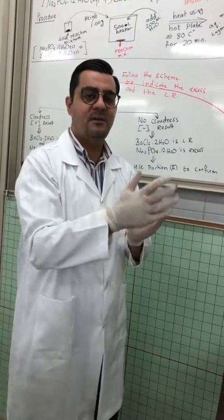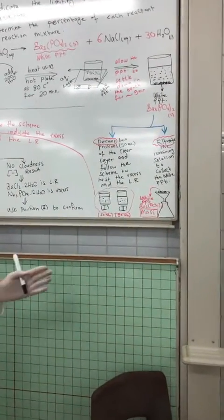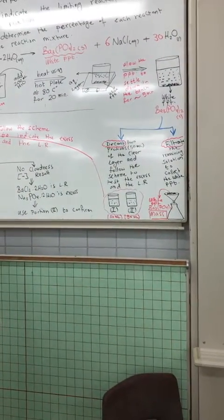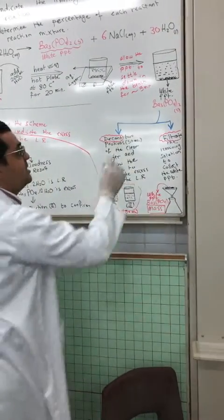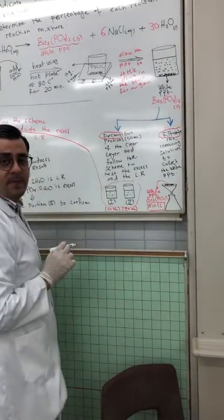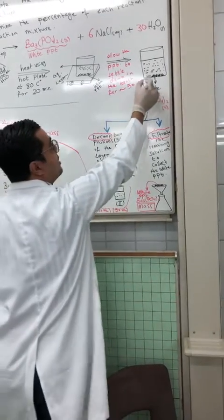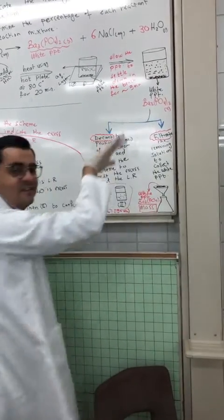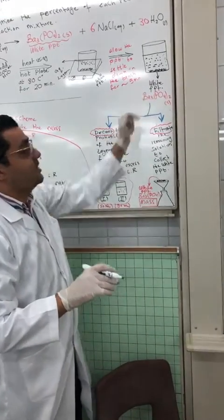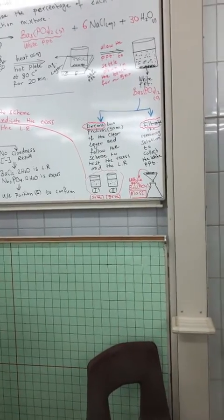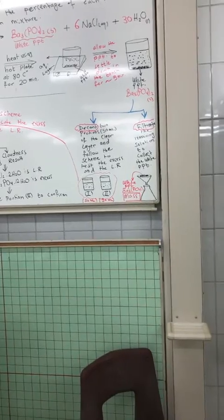Settling down will need about five minutes. Just put the reaction mixture on the bench for about five minutes. After that, the aqueous layer will be the upper layer while the solid precipitate will settle down to the bottom. Then two more steps are required, which I will explain in the next video.